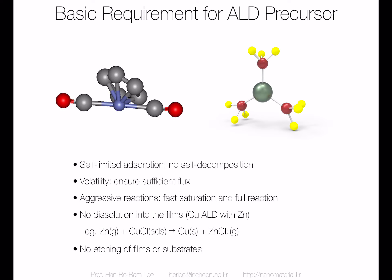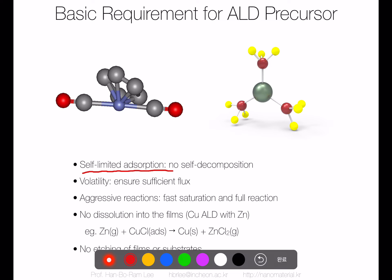To make a very good ALD process, there are a few requirements for the precursor. The first one is that all precursors have to be self-limited — they have the property of self-limited adsorption. Simply speaking, that means no self-decomposition, and no reaction between the precursor and other precursor molecules. That is the basis for the surface self-saturated reaction.